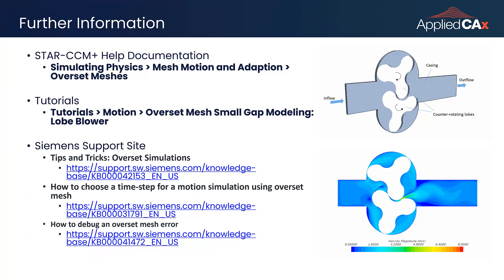For more information on Overset Mesh, please review the help documentation in STAR on Mesh Motion and Adaptation with Overset Meshes. There's also a very good tutorial available that applies the Overset Mesh method to a lobe blower, where there are actually two interacting Overset regions. There are also many articles available on the Siemens Support website, and I would highly recommend reviewing the video on tips and tricks with Overset simulations.